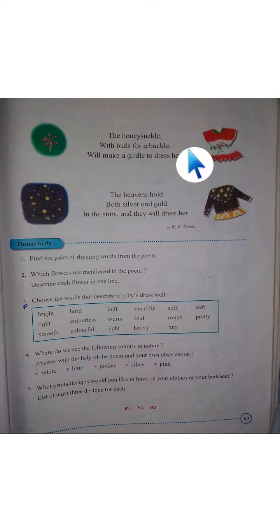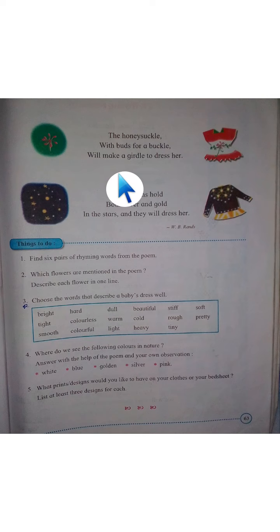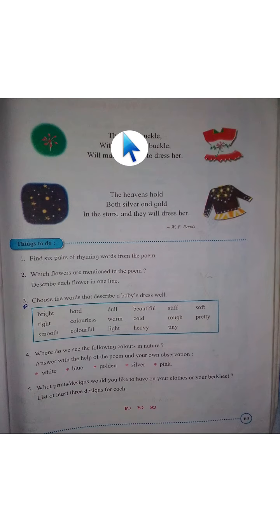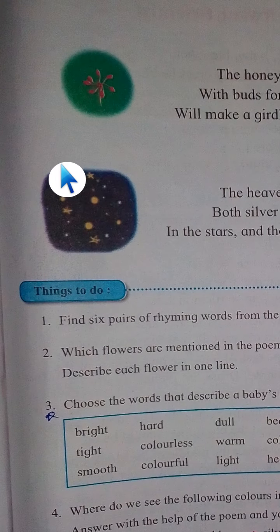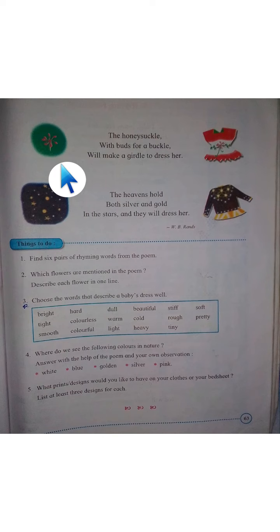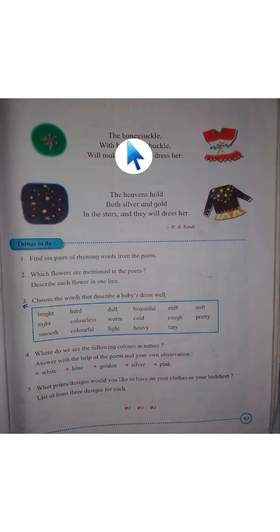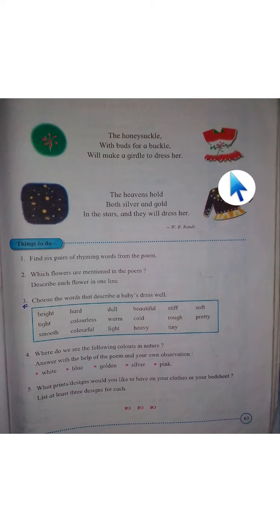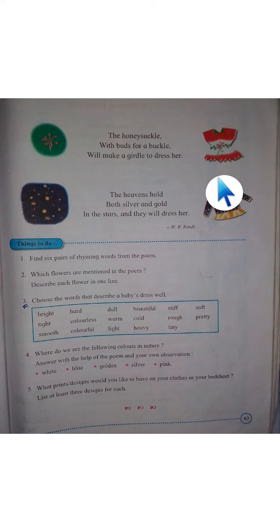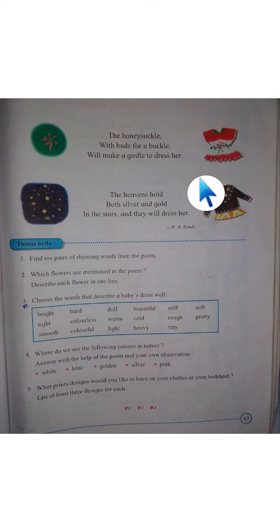The honeysuckle with birds of buckle will make a girdle to dress her. Jo honeysuckle hai — means jahaan se honey bees aake apna honey le jaati hain — us color ki bhi hamare baby ke liye dress kar saktay hain. It will look great; it will make a girdle to dress her.